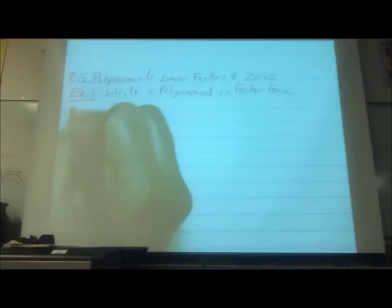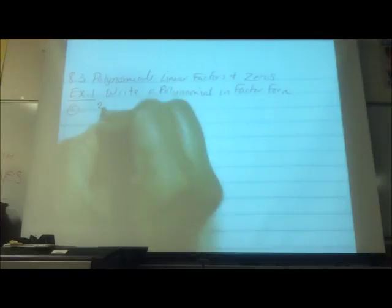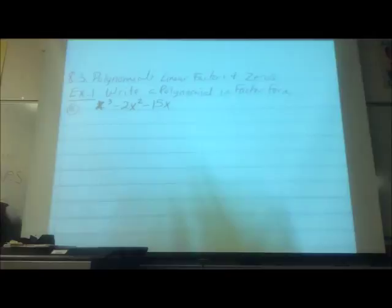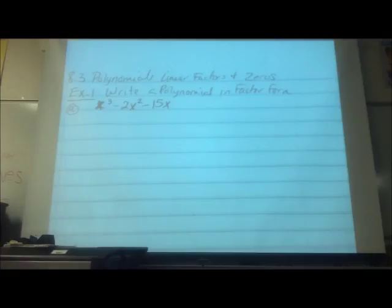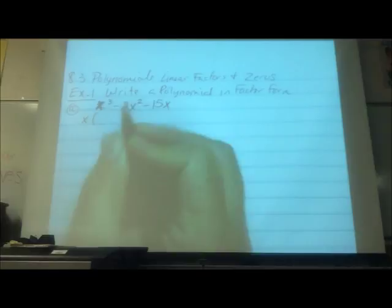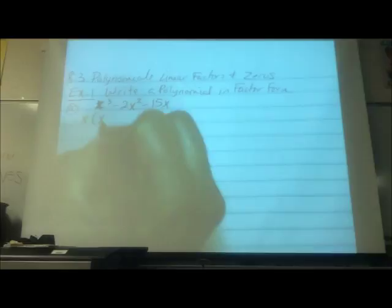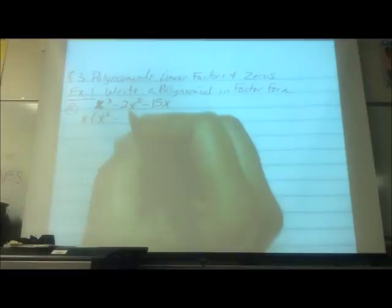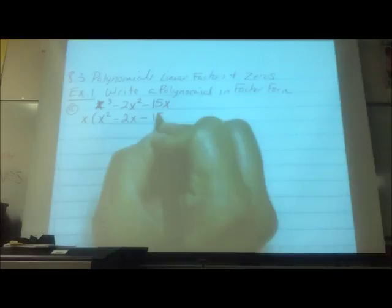There's different types, different situations. The first one is going to be X to the third minus 2X squared minus 15X. So the first thing you have to do is look at the terms they give you and ask yourself, can I take anything out that they all three have? An X. They all have an X. Perfect. So once you figure that out, I'm going to take out an X.